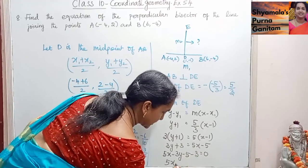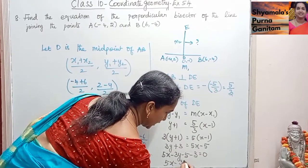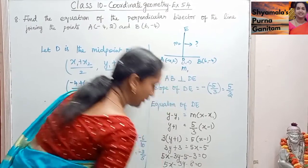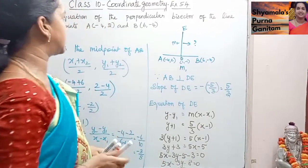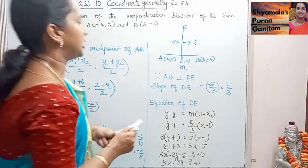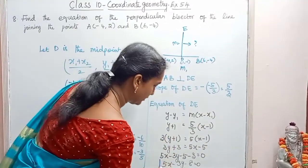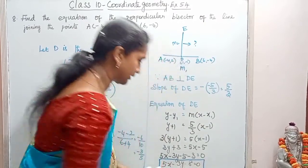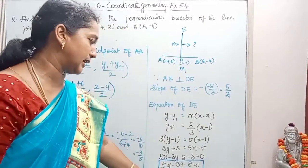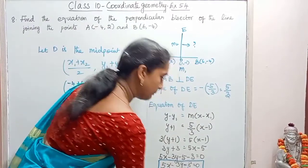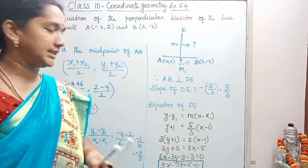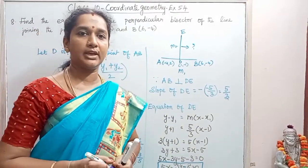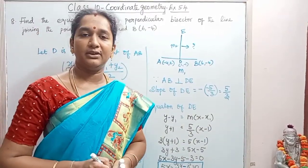So 5X - 3Y - 8 = 0. This is the equation of the perpendicular bisector. Thank you.